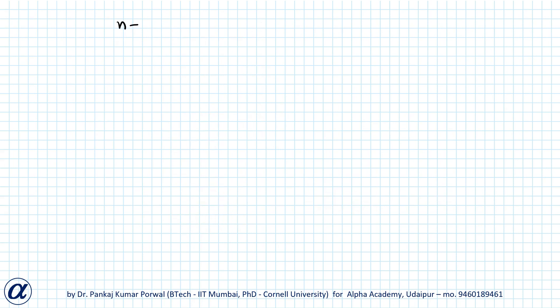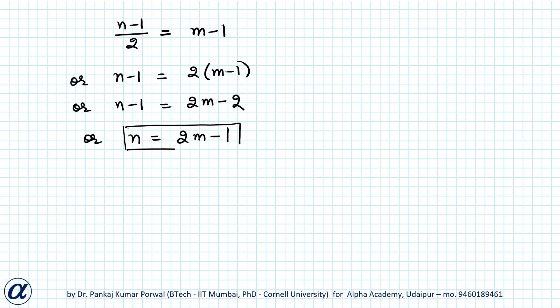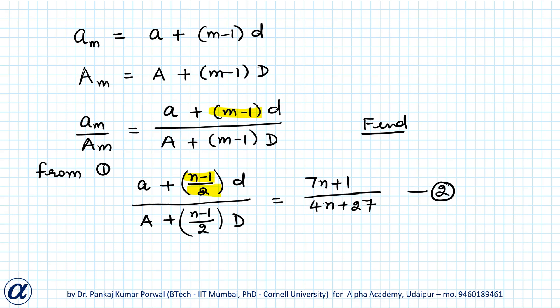So, let us find the value of n for which (n-1)/2 equals m-1. This gives n-1 = 2(m-1), so n-1 = 2m-2, which gives n = 2m-1. If I substitute n = 2m-1 on both sides of equation 2, the left hand side will equal the ratio I want, and the right hand side will be my answer.